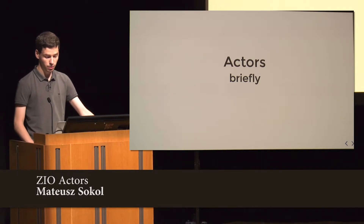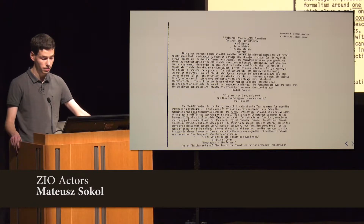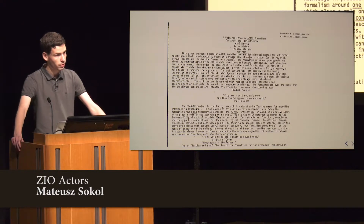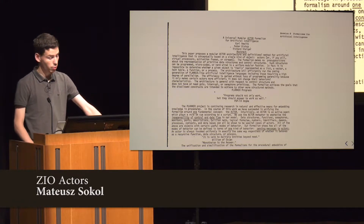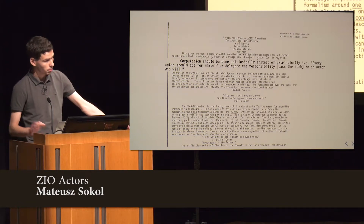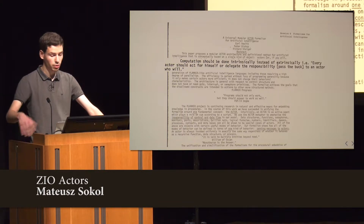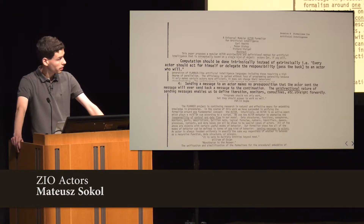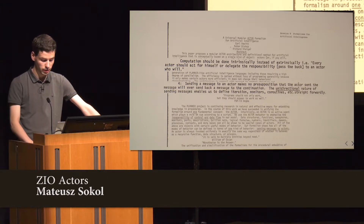So first about actors — the actor model was first introduced by Carl Hewitt in his paper from the 1970s, where he described the actor model as a set of actors communicating with each other with messages that do not share a common state. The paper also describes the fire-and-forget interaction pattern, where we send a message and do not expect a message to be sent back to the sender.